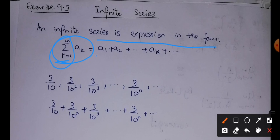Putting k equal to 1 gives a_1, k equal to 2 gives a_2, and so on. The general term is a_k. Such an expression is named an infinite series. In simple words, an infinite series means we are adding the terms of an infinite sequence. Since a sequence is always infinite, by adding its terms we get an infinite series.